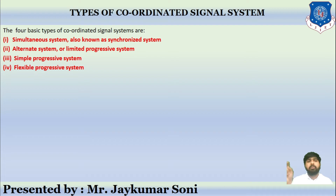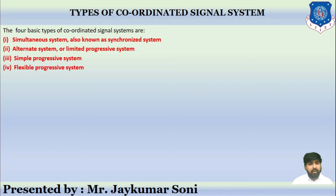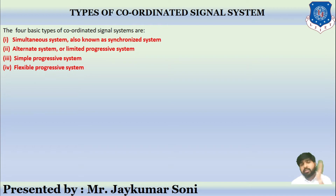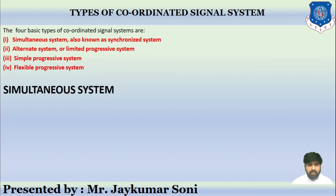There are four basic types of coordinated signal systems. The first is called the simultaneous system, the second is called the alternate system, the third is called the simple progressive system, and the fourth is called the flexible progressive system. The simultaneous system is also called the synchronized system, and the alternate system is also called the limited progressive system.